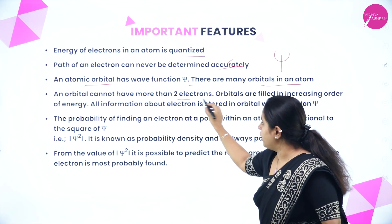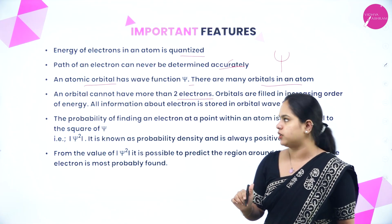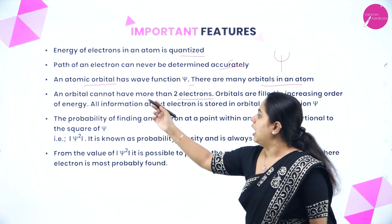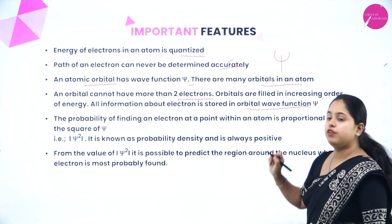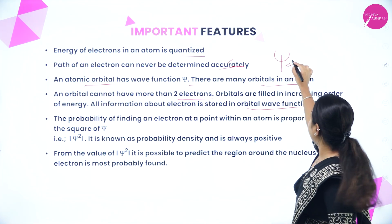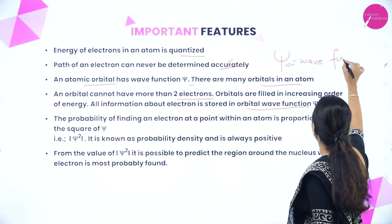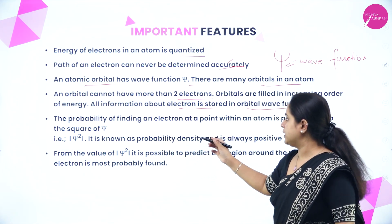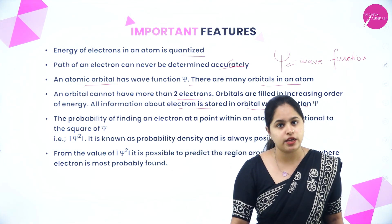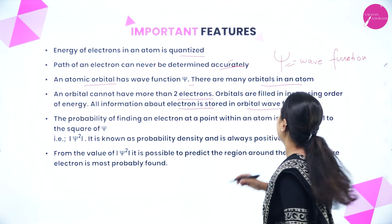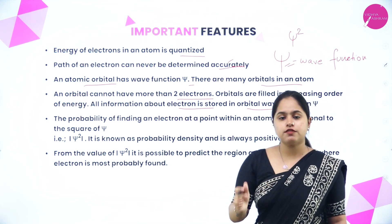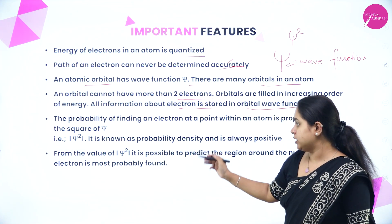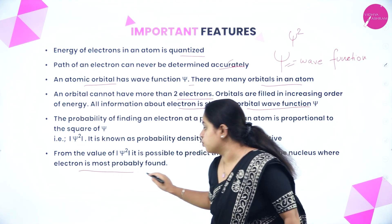An orbital cannot have more than two electrons. Orbitals are filled in increasing order of their energy. All information about an electron is stored in its orbital wave function psi. The probability of finding an electron at a point within an atom is proportional to psi square, which gives the probability of finding an electron in a region inside the atom.